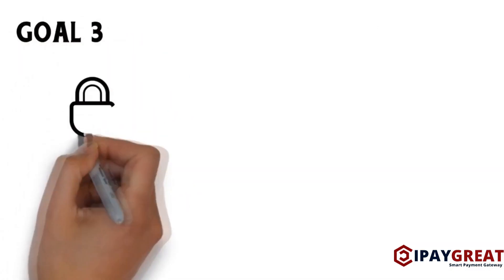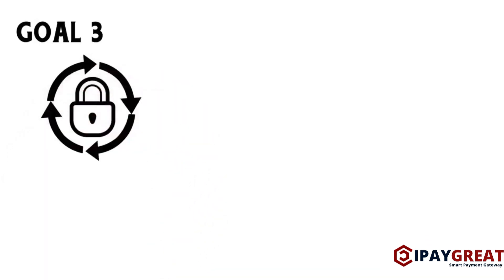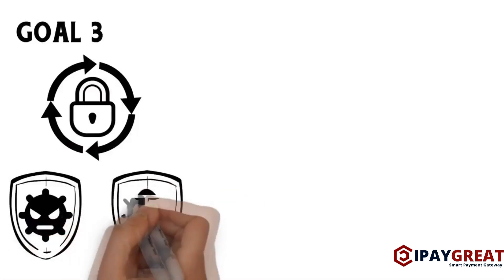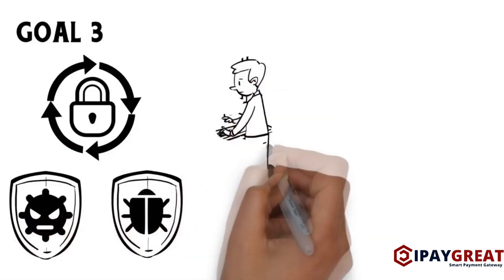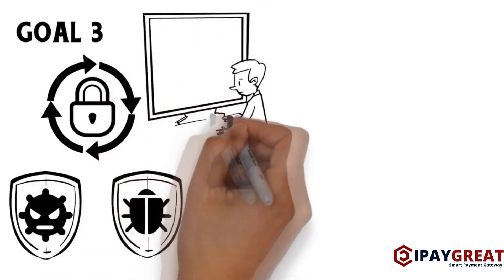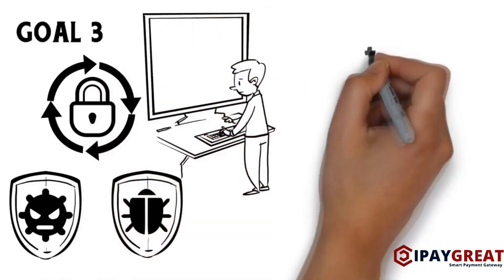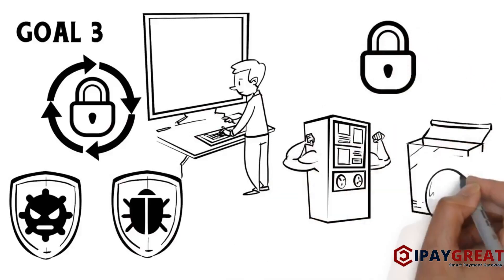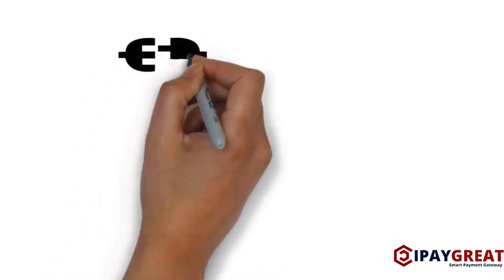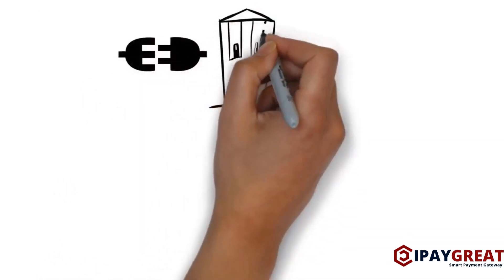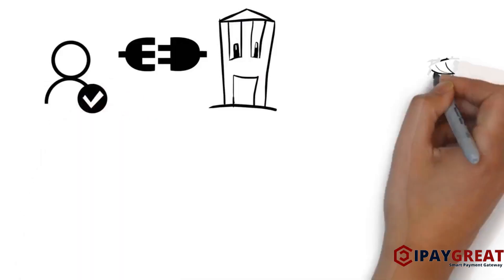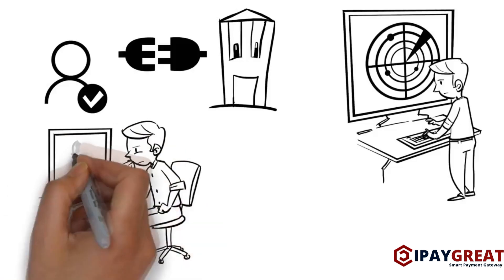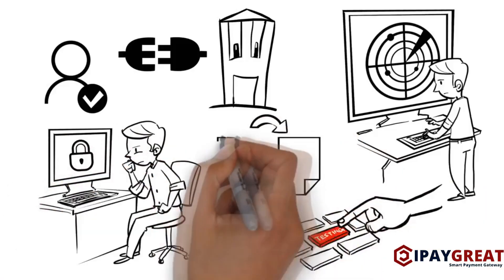Goal 3: Maintain a vulnerability management program. Implement the use and ongoing updates of antivirus and malware protection tools and ensure that they produce adequate logs of activities that are monitored by qualified organizational staff. Also, ensure that the organization develops and maintains secure systems and applications. Some of the controls required for this goal include integrating the use of reputable vulnerability reporting entities, performing periodic vulnerability scans, and implementing secure application coding, testing, and program change practices.